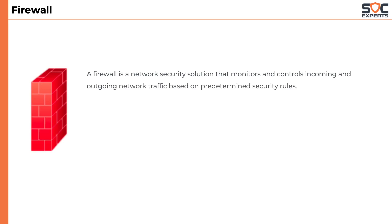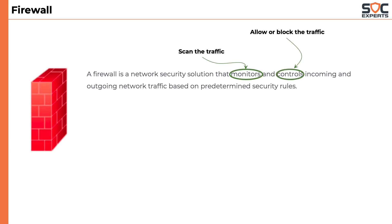A firewall is a network security solution that monitors and controls incoming and outgoing network traffic based on predetermined security rules. Monitor means it scans the traffic. Control means allow or block. Incoming means traffic coming from the internet to our network. Outgoing means traffic initiated from our network to the internet. Basically, a firewall acts as a trained gatekeeper, allowing or blocking traffic as per the rules.